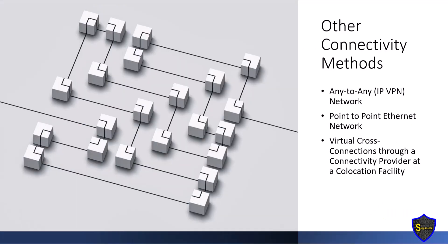Some connectivity methods to consider are any-to-any network, point-to-point network, and virtual cross-connections through a connectivity provider at a co-location facility. An any-to-any IP VPN network, also known as a virtual private network, enables communication among multiple locations securely and privately over the public internet. This setup allows various sites within an organization to connect to the same network and exchange data securely, and any site can communicate with any other site within the VPN.